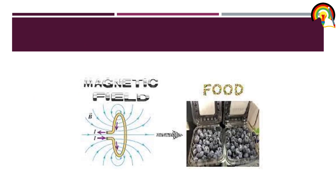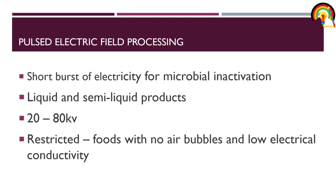Preservation of food with oscillating magnetic field involves sealing the food in a plastic bag and subjecting it to 1 to 100 pulses at temperatures of 0 to 50 degrees Celsius. The total exposure time will range from 25 to 100 minutes.